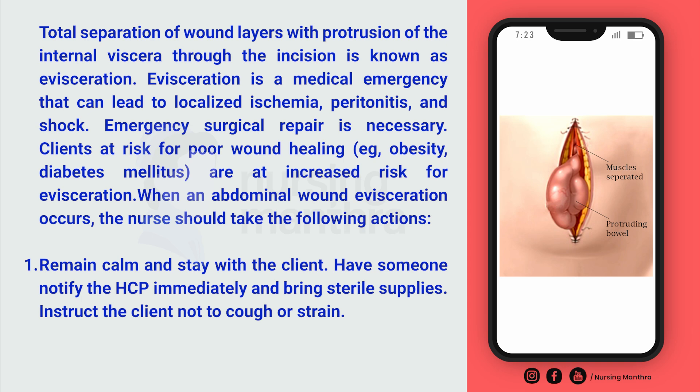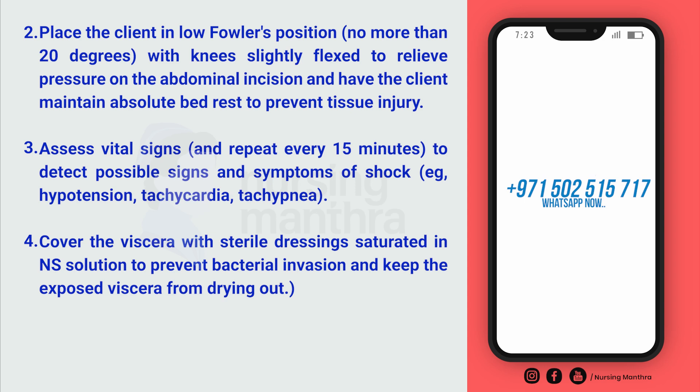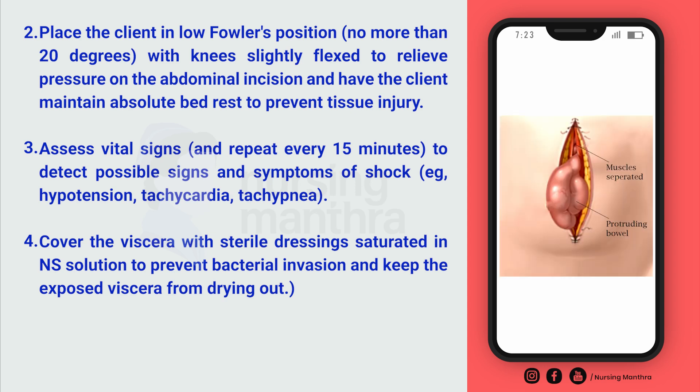When abdominal wound evisceration occurs, the nurse should take the following actions: remain calm and stay with the client — don't panic. Have someone notify the healthcare practitioner immediately and bring sterile supplies. Instruct the client not to cough or strain, as this will cause further protrusion of the bowel loop. Place the client in low Fowler's position — not more than 20 degrees elevation — with knees slightly flexed, to relieve pressure on the abdominal incision. Maintain absolute bed rest to prevent further tissue injury.